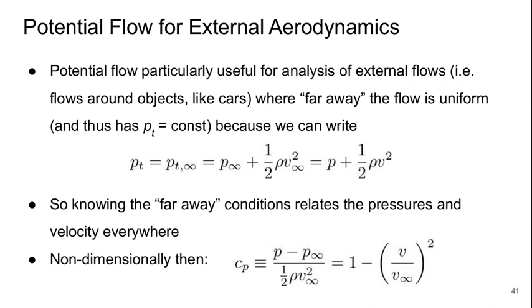Potential flow is particularly useful for the analysis of external flows, for example flows around objects like cars, where there's some region far away from the object where the flow is uniform and thus has constant total pressure. We can say that if the total pressure is everywhere equal to the free stream (using the subscript infinity for free stream conditions), then the free stream total pressure equals the static pressure far away plus one-half times rho times the velocity far away squared. This equals, at any point in the flow, the local pressure plus one-half times rho v squared. So knowing the far away conditions relates the pressures and velocities everywhere.